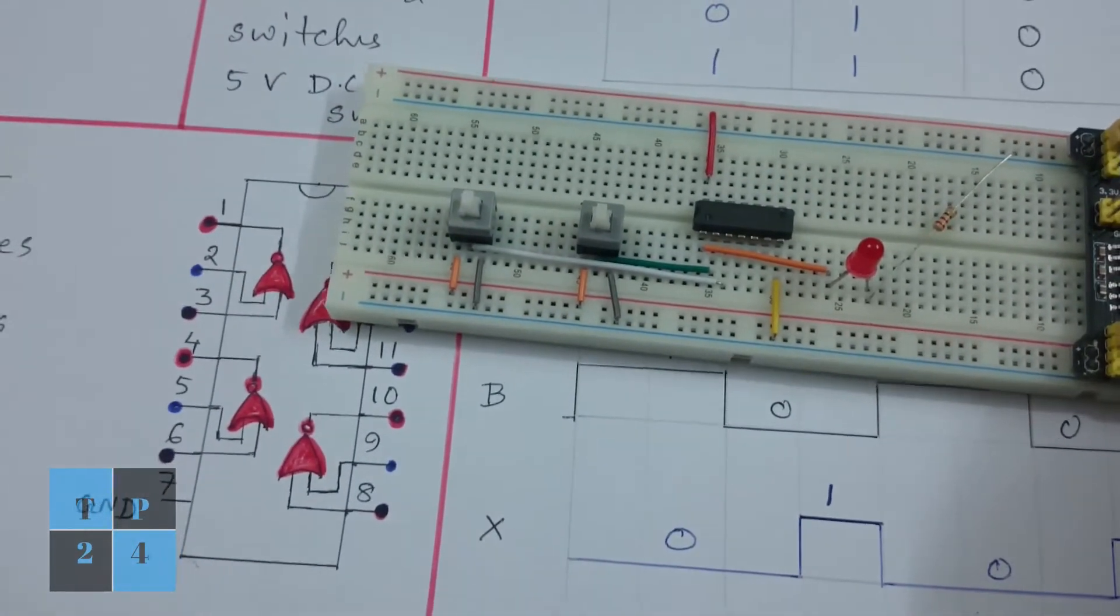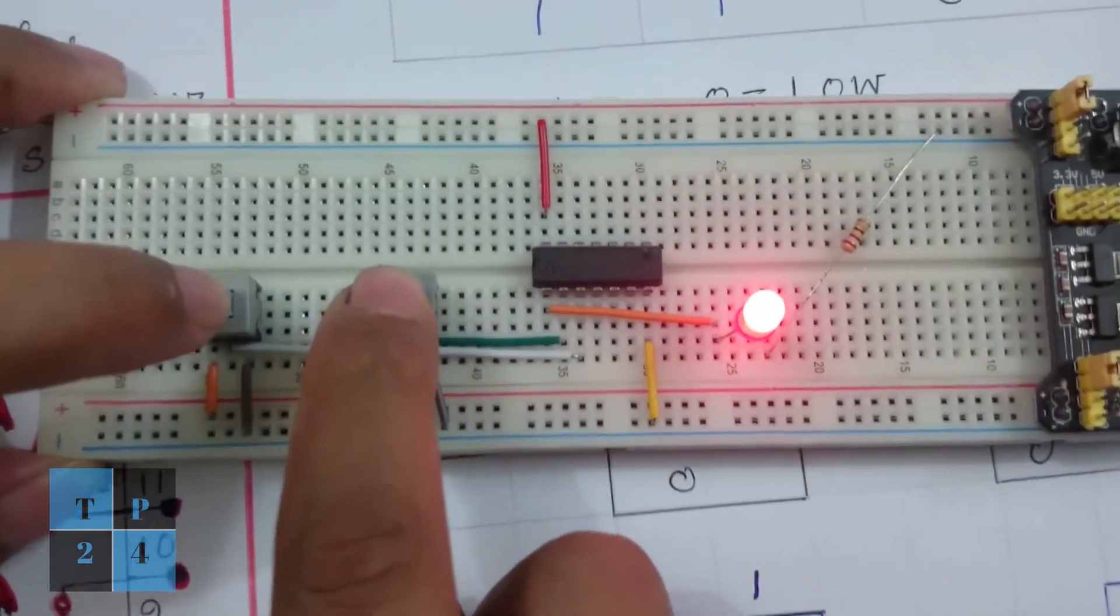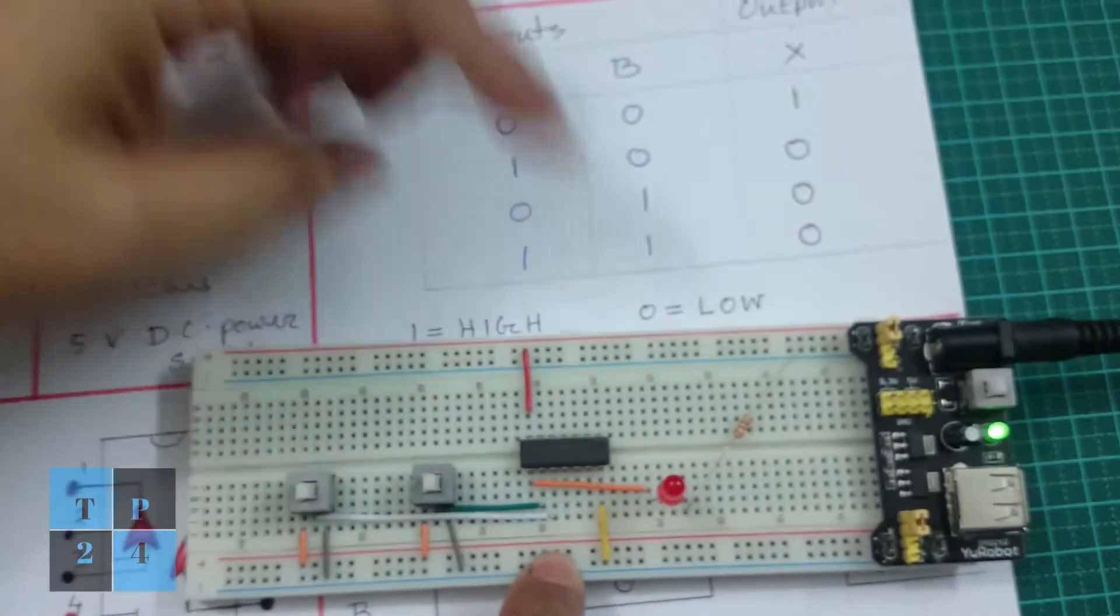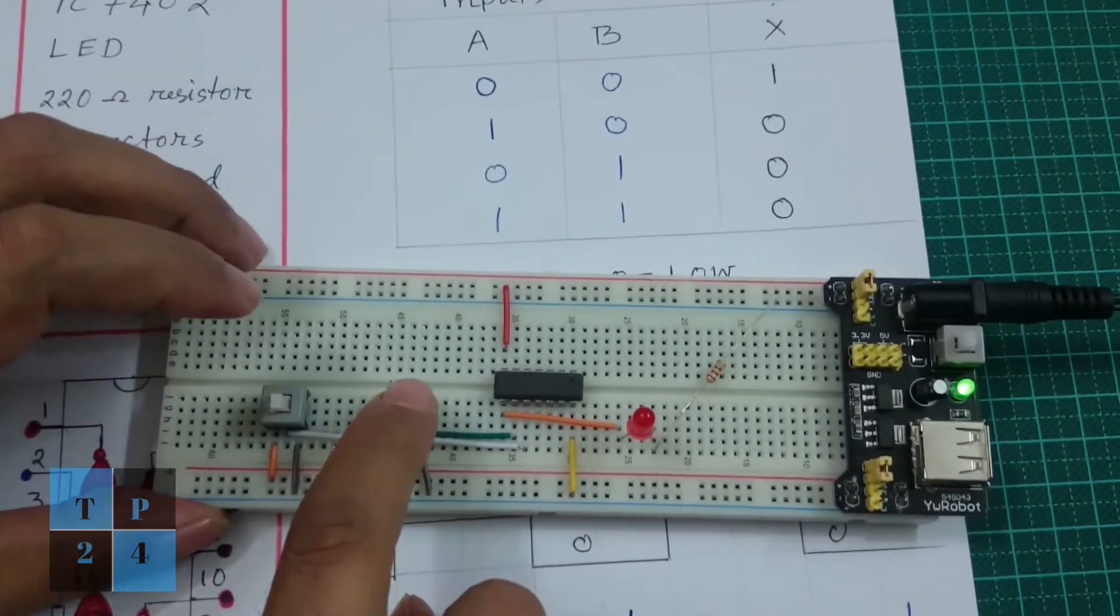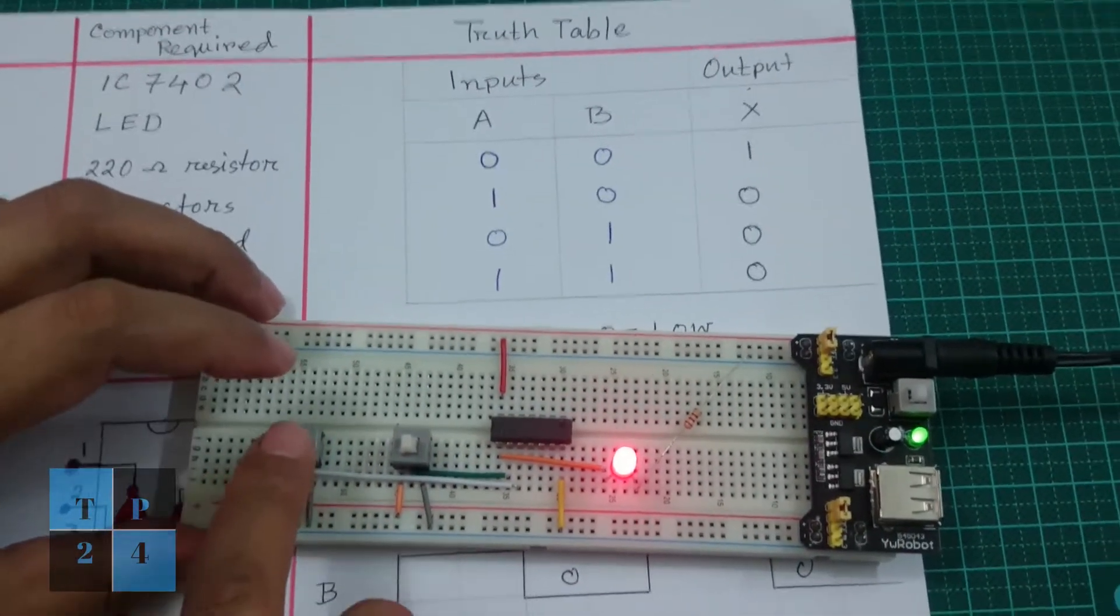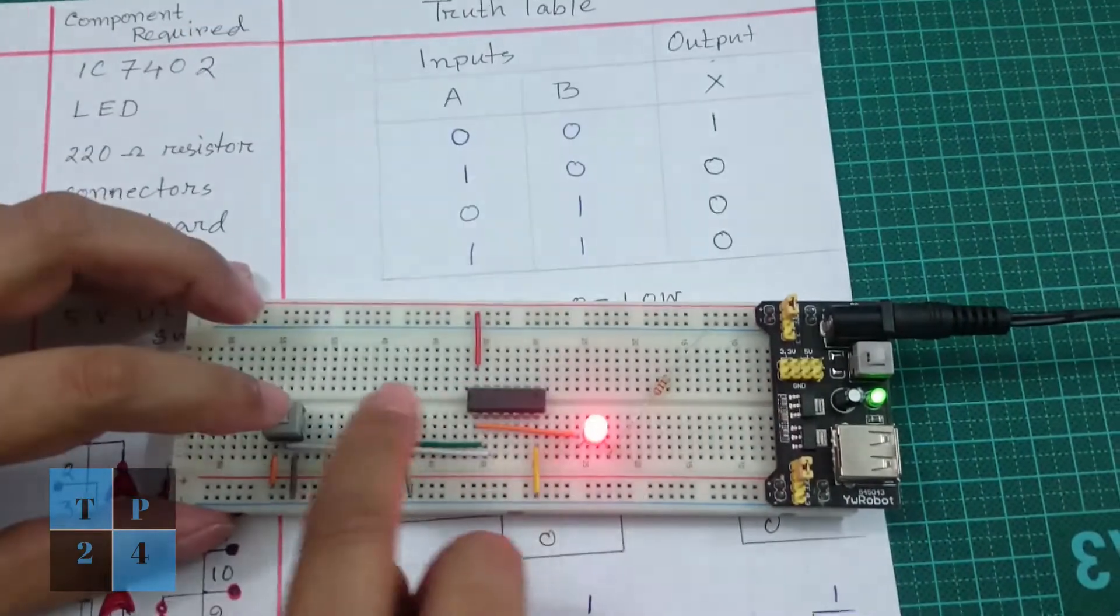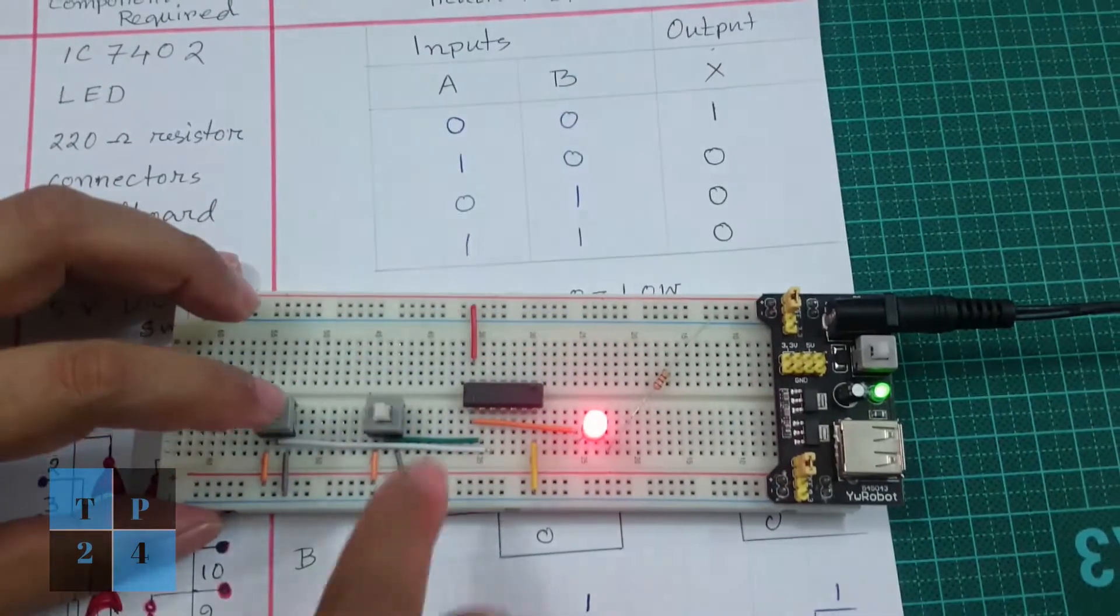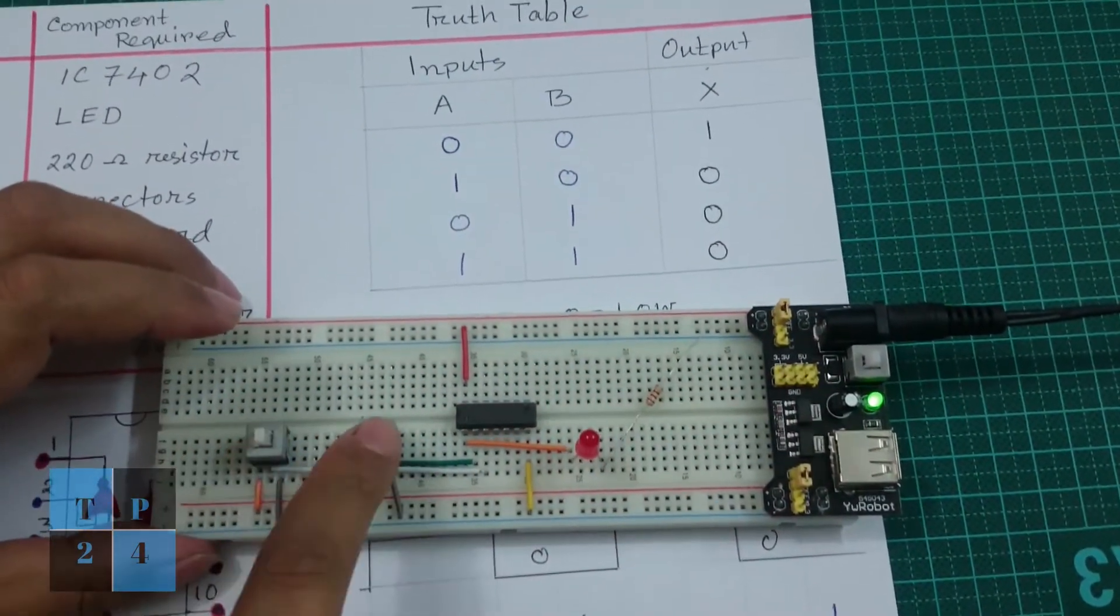Now I am pressing my power supply switch. If I press both to 1, the output is 0, meaning the LED is off. If A and B are 0, the output is 1. If A is 1 and B is 0, the output is 0.